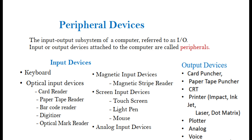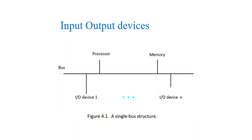Output devices include: Card Puncher, Paper Tape Puncher, CRT, Printer (Impact, Ink Jet, Laser, Dot Matrix), Plotter, and Analog Voice Input/Output Devices. Figure 4.1 shows a single bus structure with Processor, Memory, and I/O Device 1 through I/O Device N connected via a common bus.